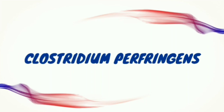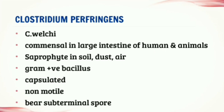Clostridium perfringens are previously known as Clostridium perfringii, which is a gram-positive rod-shaped bacilli. This bacteria takes the purple color on gram staining and is seen everywhere, but most commonly in soil and in the intestine of mammals. These are capsulated and non-motile bacteria.